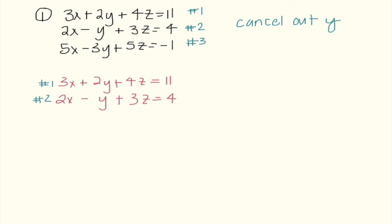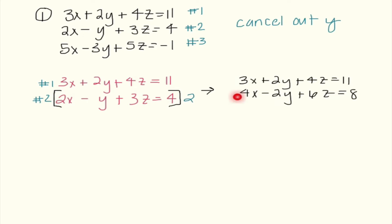The reason I think that is because looking at these y values, I notice the y term in equation 2 has a coefficient of negative 1, which makes it really easy to make opposites with. So I'm going to look at equations 1 and 2 and figure out what I need to do to cancel them out. We already have a positive 2, so I'm going to multiply equation 2 by 2 to get a negative 2 there. I get 4x minus 2y plus 6z equals 8, and when I combine these, I get 7x plus 10z equals 19.